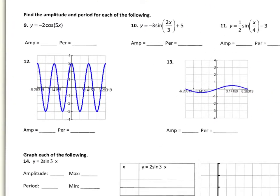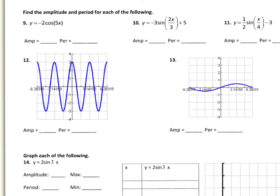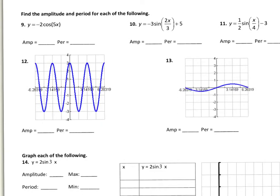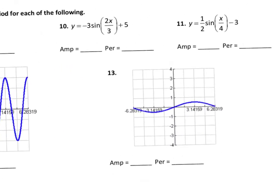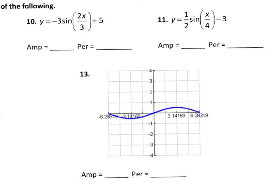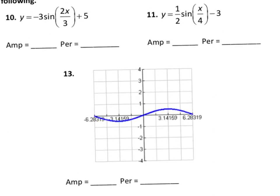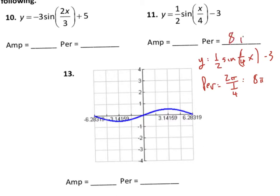Problems 9 through 13 ask you to find amplitude and period. For number 11, which has x over 4, don't panic — x over 4 is the same as (1/4)x. Rewriting it as (1/2)sin((1/4)x) − 3, the period is 2π divided by 1/4, which equals 8π. The amplitude is simply the absolute value of the coefficient out front — if it's negative, the amplitude is still positive.